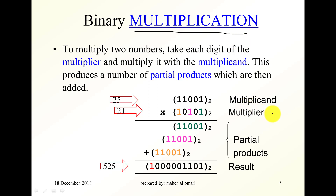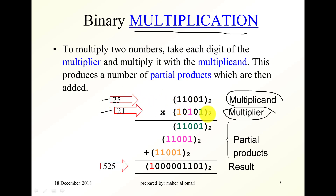Binary multiplication: there is the multiplier — in this example the multiplier is 21 in decimal — and the multiplicand, which is 25 in decimal. This is the binary representation of 25 and this is the binary representation of 21. We take the first digit of the multiplier, which is one, multiply it by the multiplicand, and get the multiplicand itself. The second digit is zero, so multiplying gives all zeros, shifted one position.